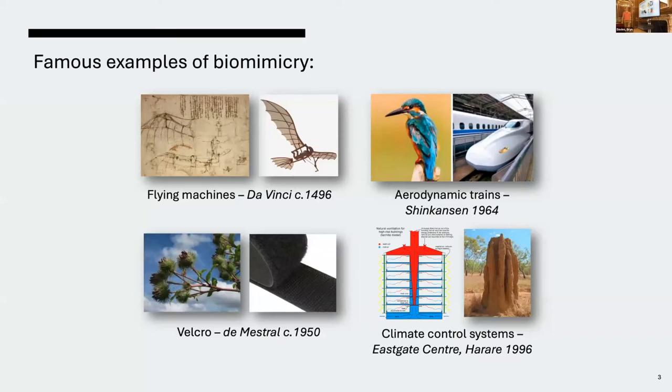There are some very famous examples of biomimicry doing impressive things. Examples people like to cite are the Japanese bullet trains, allegedly inspired by bird beaks, velcro, and buildings that have passive ventilation systems based on heat flux inspired by termite mounds.